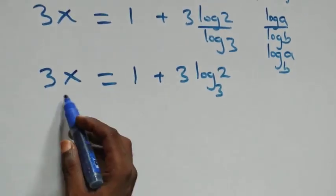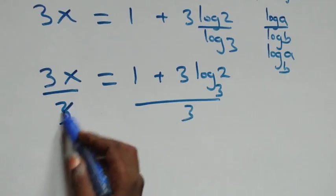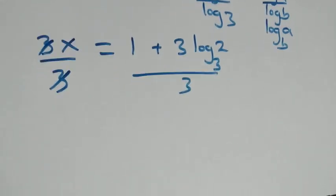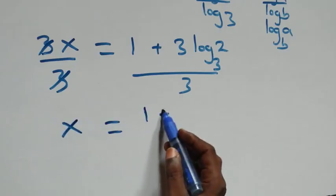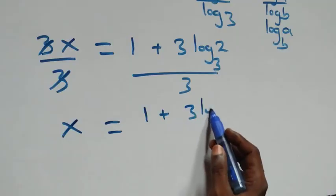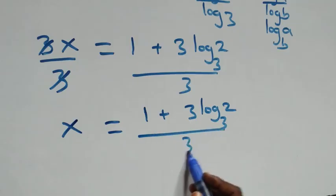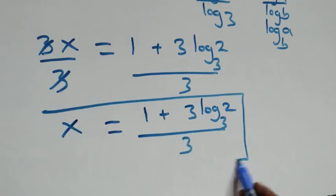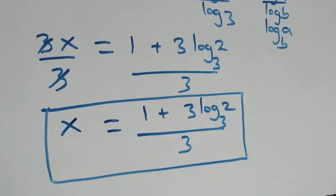Then from here we divide both sides by 3 — here 3 cancels each other — and we are left with x, which equals to (1 plus 3 log₃2) all over 3. So here we have the value of x in this given problem: x equals to (1 plus 3 log₃2) all over 3.